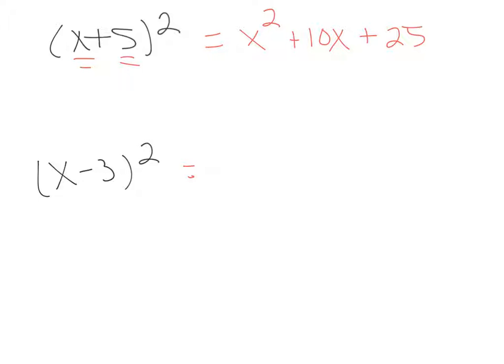x minus 3 quantity squared. What do you think is going to happen here? x squared plus 9, and doubled would give you 6x. But is it a plus 6x or a minus 6x? Minus 6x.